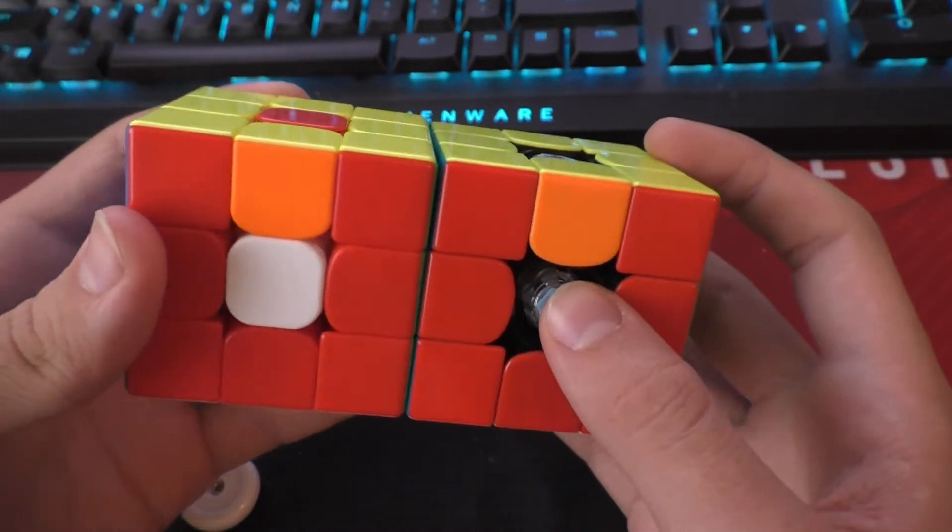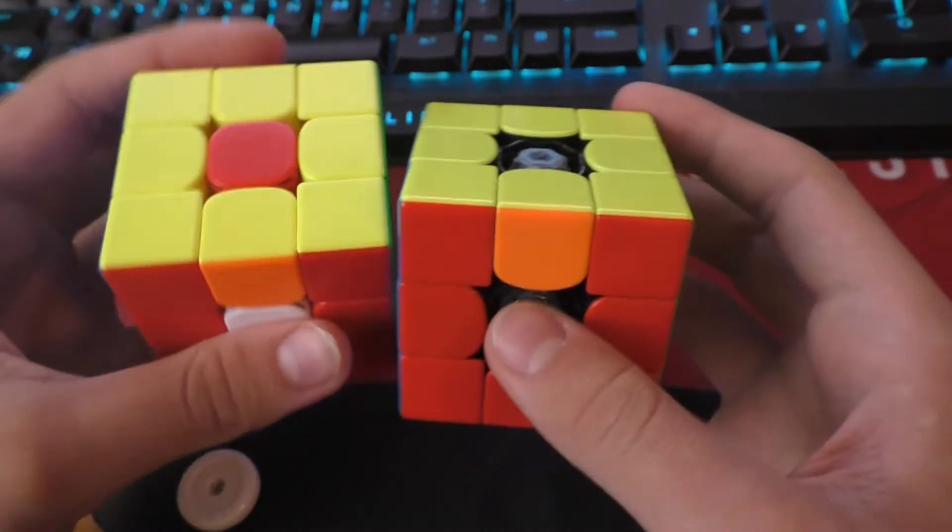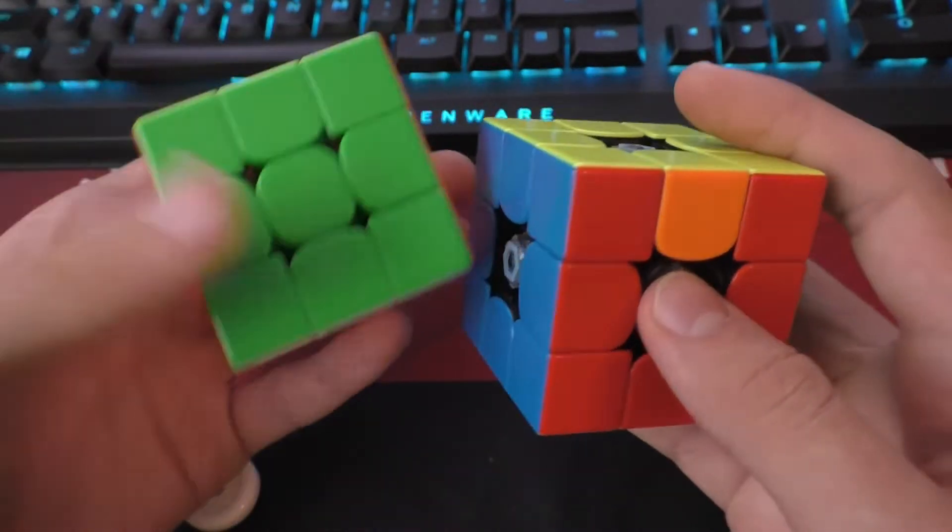Now, if I were to add the centers back on, then you would see that these two cases are actually the same. I have edge parity on a 3x3 with centers and edge parity on a void cube.